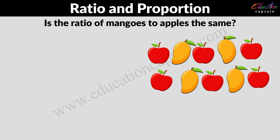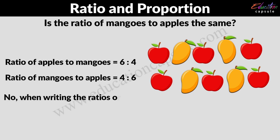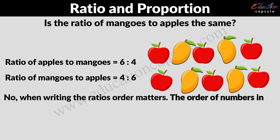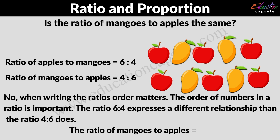Is the ratio of mangoes to apples the same? If the ratio of apples to mangoes is 6 is to 4, then the ratio of mangoes to apples is 4 is to 6. So we can say that no — when writing a ratio, the order matters. The order of the numbers in the ratio is very important. The ratio 6 is to 4 expresses a different relationship than the ratio 4 is to 6. The ratio of mangoes to apples is 4 is to 6.